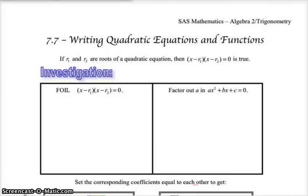Our final section for chapter 7 is, before we've been focusing on finding the roots of a quadratic equation — where does the parabola cross the x-axis? The roots of an equation are the zeros of the equation or function, which are the solutions when you set it equal to zero. That's what we've been working on: I give you the quadratic, you give me the solutions, either by doing the quadratic formula, factoring, completing the square, or graphing. But now we're going to work backwards.